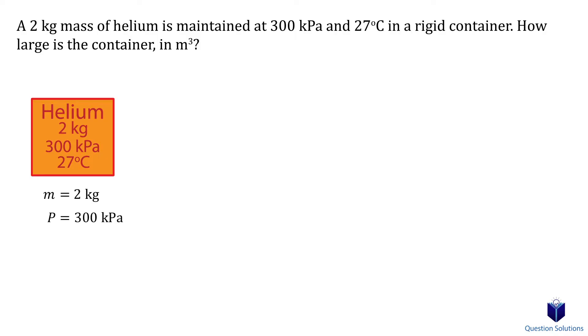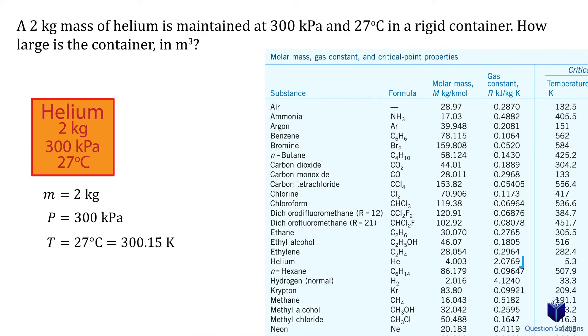The pressure is 300 kilopascals, and the temperature is 27 degrees. So that's 300.15 Kelvin. Let's also find the gas constant of helium.